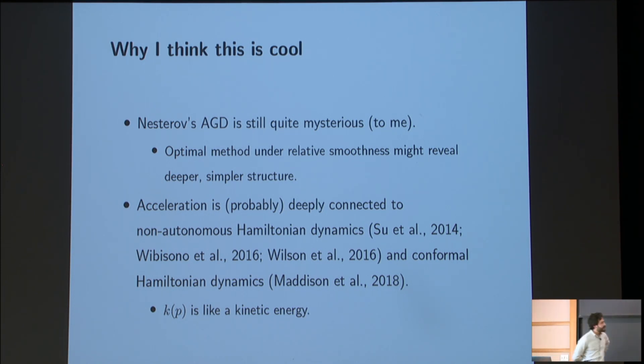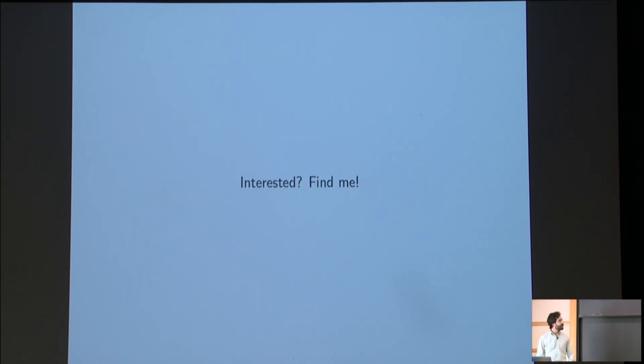And then finally, this is sort of where it starts pointing to Hamiltonians. Acceleration has recently been connected to some non-autonomous Hamiltonian systems. This is the work of Su, Boyd and Candes, and some work out of Michael Jordan's group. And then finally, in another paper, we connect that sort of dual-space version to conformal Hamiltonian dynamics, where this k of p choice is like a kinetic energy. OK, so if you're interested in thinking about that, find me. Thank you.